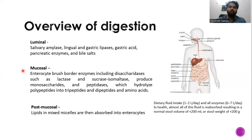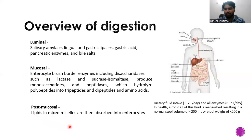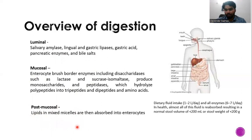Post-mucosally, whatever is digested in the gut and absorbed by the mucosa enters either as mixed micelles containing lipids — which travel via lymphatics — or as simple nutrients that go into the portal vein and to the liver.